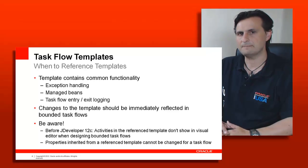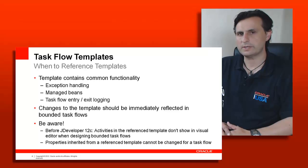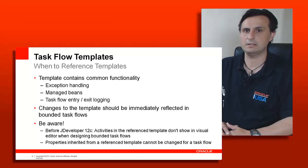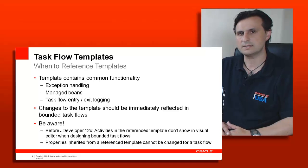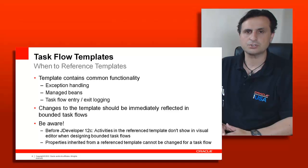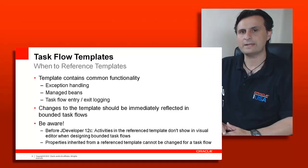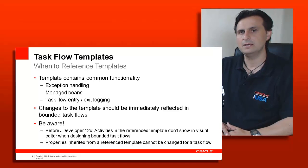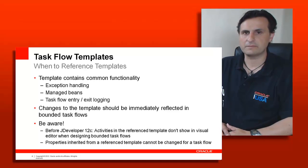One downside of referencing templates is that they are not shown as visual artifacts within the task flow diagrammer. So if a task flow template contains an exception handling routine — which I would highly recommend using a template for — that exception handling routine won't show in the diagrammer. In 12c it will show as a grayed-out area indicating that visual or non-visual activities have been added via a bounded task flow template. Until then it's not visible, and you need to be aware of that.